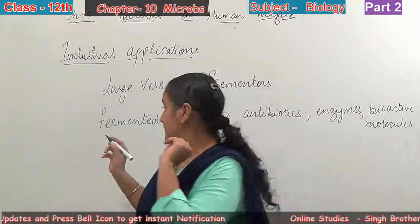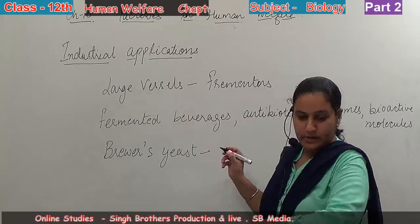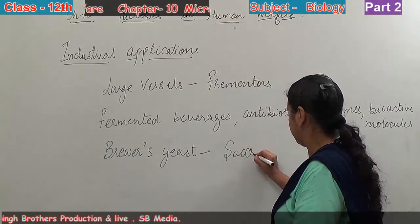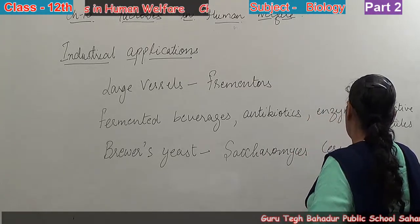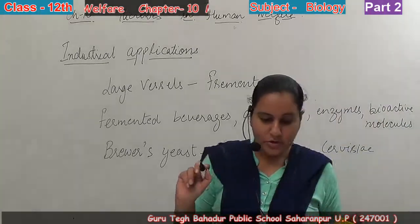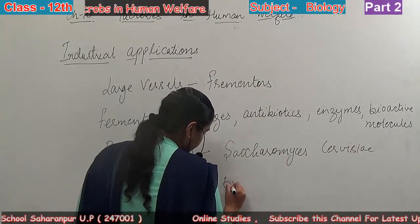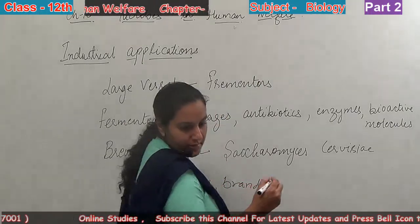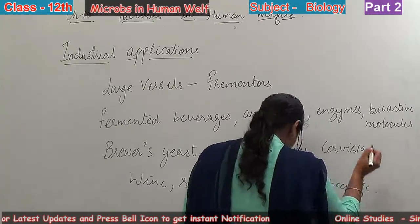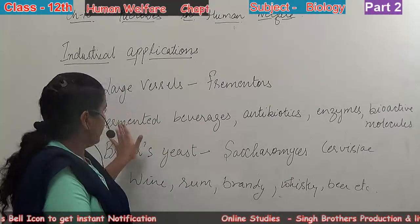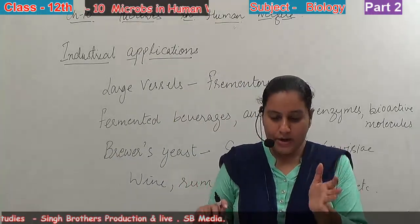Brewer's yeast, that is basically Saccharomyces cerevisiae, is used to prepare wine, rum, brandy, whiskey, and beer. So in fermented beverages, these things are made with the help of brewer's yeast. The difference depends upon the process and the raw material that is used.